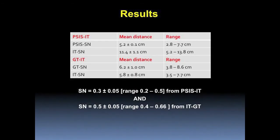What we found is that the sciatic nerve was placed on average 5.2 cm below the posterior superior iliac spine, and 11.4 cm above the ischial tuberosity along a line between the posterior superior iliac spine and the ischial tuberosity. Along a line from the greater trochanter to the ischial tuberosity, the sciatic nerve lay 6.2 cm from the greater trochanter and 5.8 cm from the ischial tuberosity.